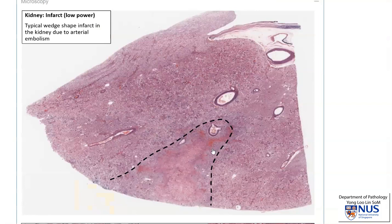Here is what the infarction may look like microscopically. We can see a vague wedge-shaped area that looks a little bit different from the rest of the kidney. Just to orientate you — this is the renal capsule, this is the cortex, this is the medulla, and over here is the renal pelvis.